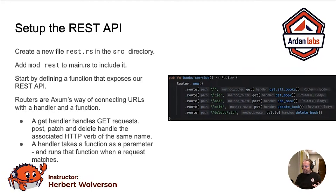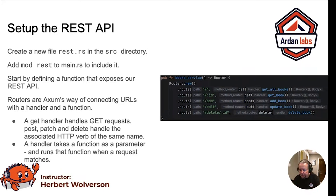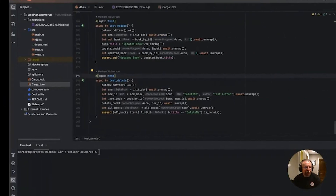Axum makes a lot of this very straightforward. It's very easy to read. You can see that slash add goes to a post method to update a book, slash edit puts an update to the book, slash delete with an ID number deletes a book. So it's a relatively straightforward mapping.